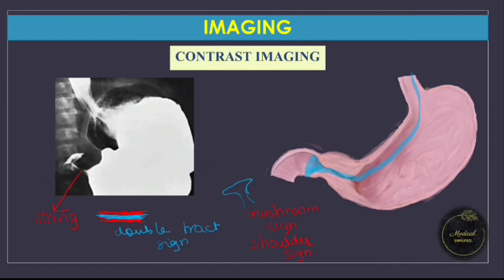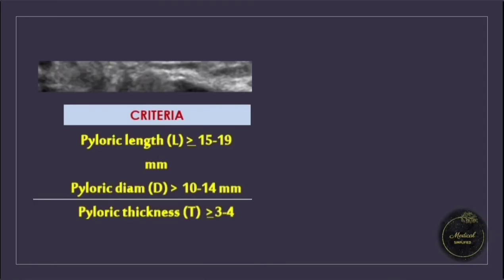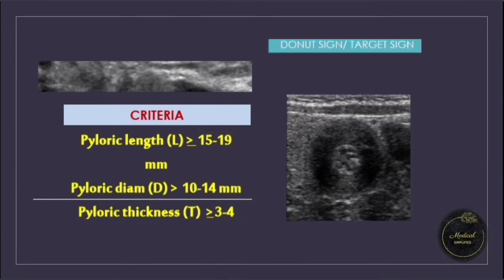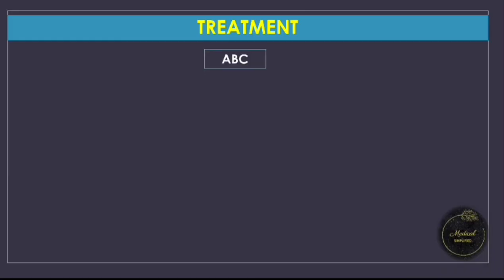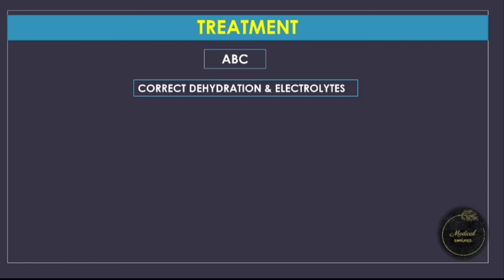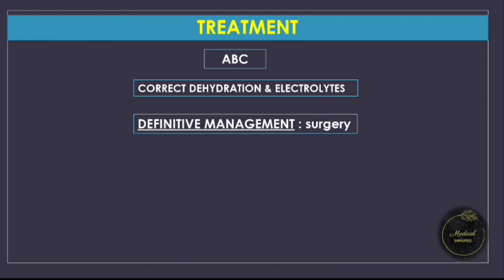The most commonly asked among these in exams are the USG criteria and the donut or target sign. Coming to treatment: we always start with ABC — airway, breathing, and circulation. The patient is usually dehydrated with electrolyte abnormalities, which must be corrected per guidelines. Definitive management is always surgical. The surgery is called pyloromyotomy, or classically Ramstedt pyloromyotomy, which involves cutting through the muscle layers of the pylorus.